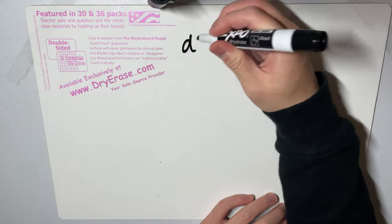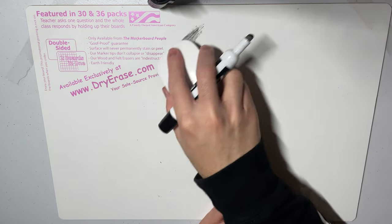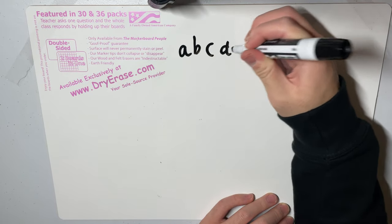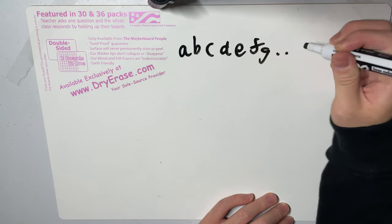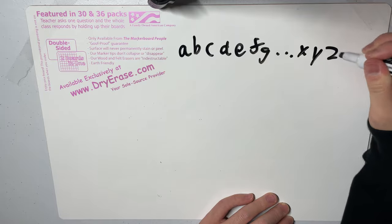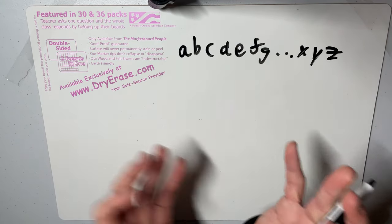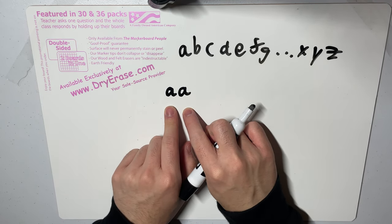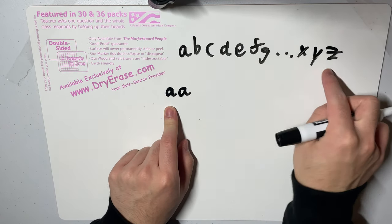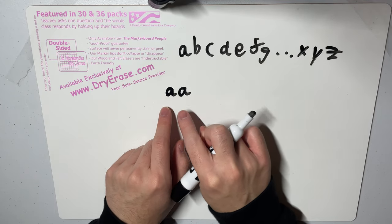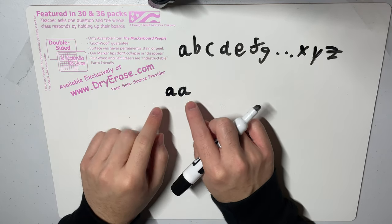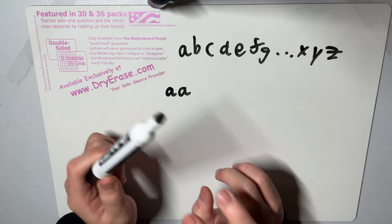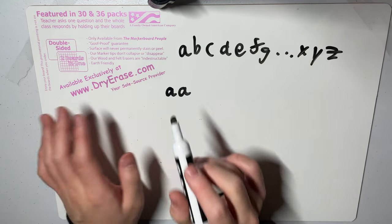For example, if we had a string that was just all the letters, all 26 letters, like a b c d e f g all the way to x y z, then the answer to this input would be 'aa'. The reason being is because 'aa' doesn't appear as a substring in this string, but all strings of length one appear as a substring.